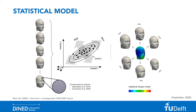Anatomical landmarks, such as the eyes and the tip of the nose, are now used to create principal components to form a statistical shape model. This model can be visualized using a color map, where blue means low variation and green means high variation, projected on the calculated average shape.